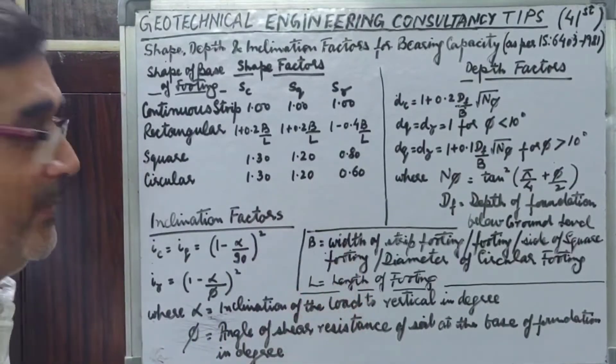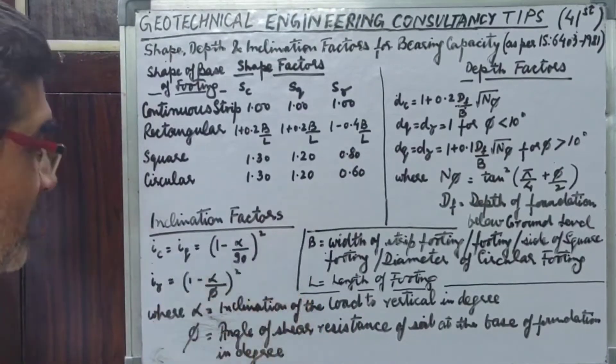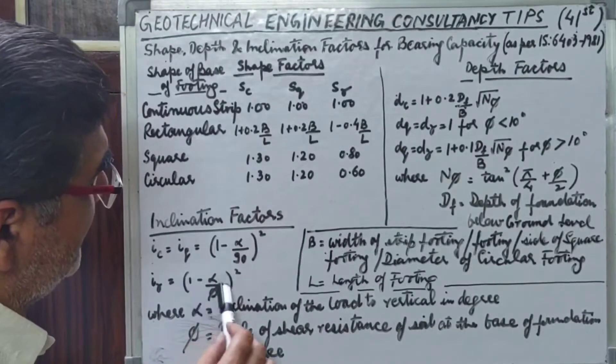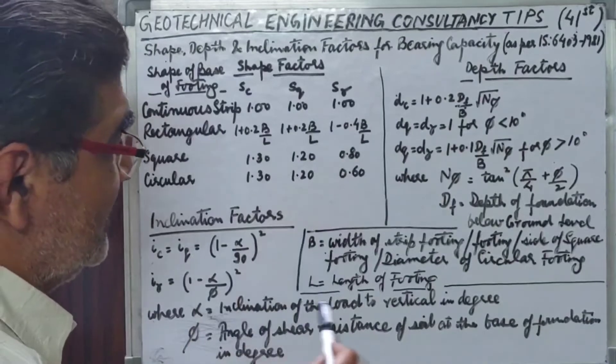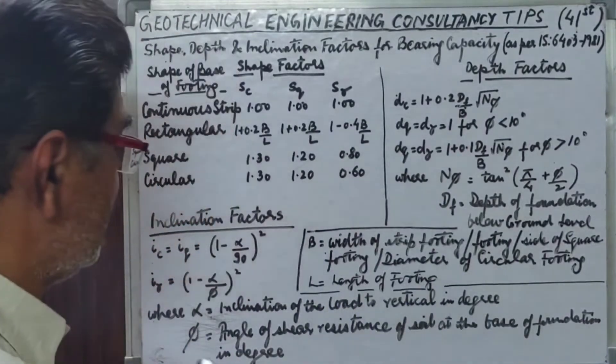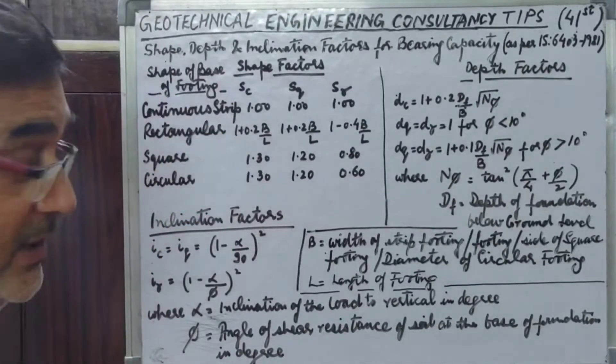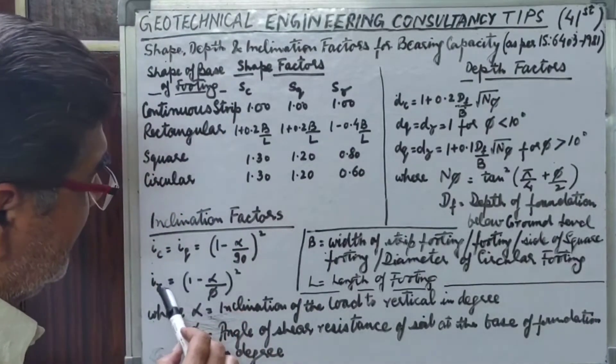And similarly I gamma is being calculated as 1 minus alpha upon phi, where alpha is the inclination of the load to vertical in degrees, and phi is the angle of shear resistance of soil at the base of foundation in degrees. If we have alpha 0, then I gamma will be 1.